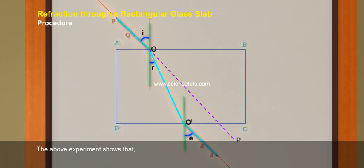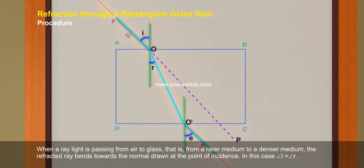The above experiment shows that when a ray of light is passing from air to glass, from a rarer medium to a denser medium, the refracted ray bends towards the normal drawn at the point of incidence. In this case, angle I greater than angle R.